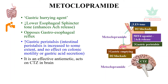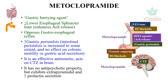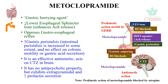Metoclopramide is an effective antiemetic that acts on the chemoreceptor trigger zone in the brain. It has no antipsychotic property but exhibits extrapyramidal symptoms and increases prolactin secretion. It is a very useful prokinetic, particularly in gastroesophageal reflux disease, and through chemoreceptor trigger zone inhibition it is a powerful antiemetic.